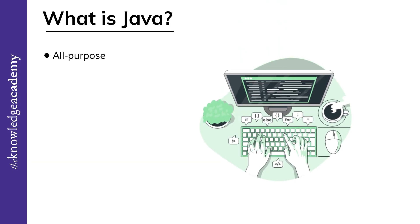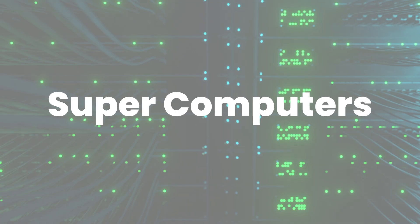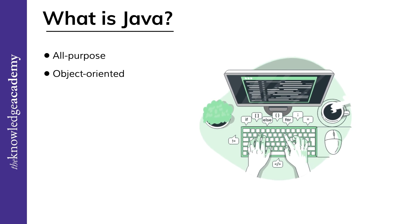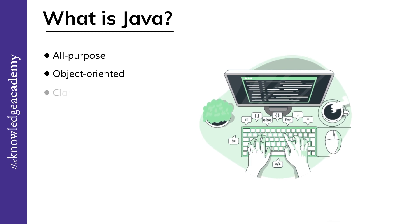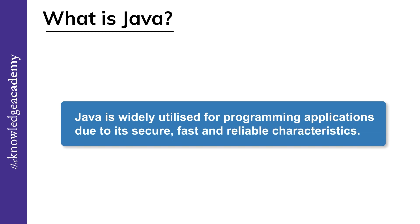All-purpose means that Java can be used to develop a variety of applications, from desktop and mobile applications to gaming consoles and even supercomputers. Object-oriented means that Java organizes data and code into objects that can interact with each other, making it easier to write and maintain code. Class-based means that Java uses classes to define the structure and behavior of objects. Java is widely utilized for programming applications due to its secure, fast, and reliable characteristics.